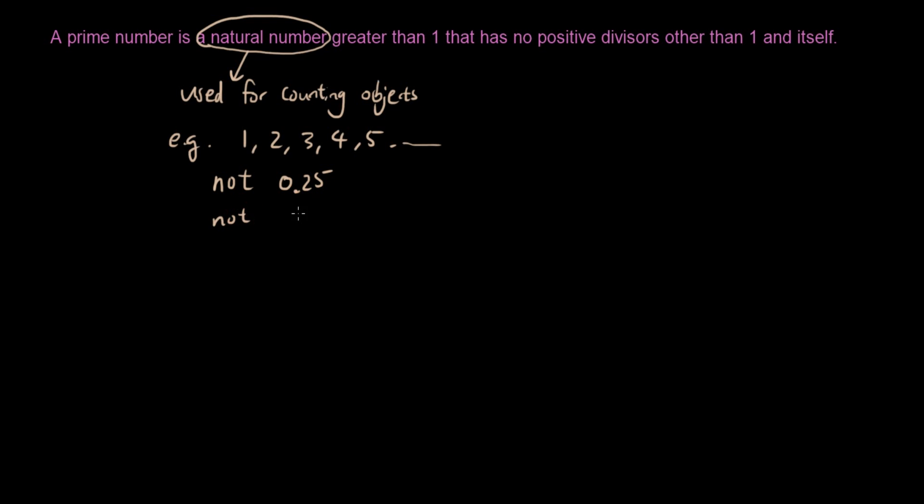And you're not allowed, let's say, a fraction such as 3 over 4, right? These are not used for counting. So natural numbers are just pretty much whole numbers that are bigger than 0.